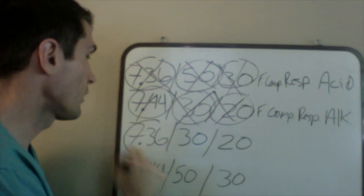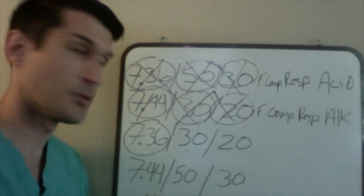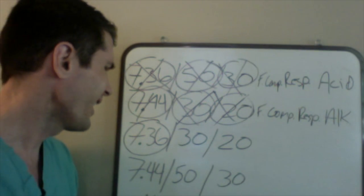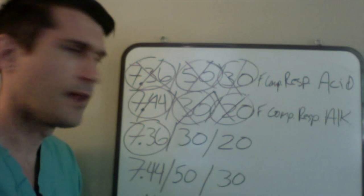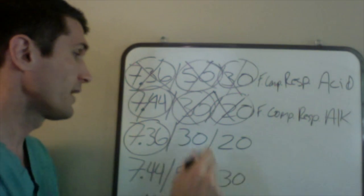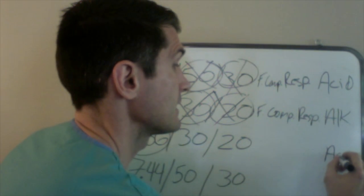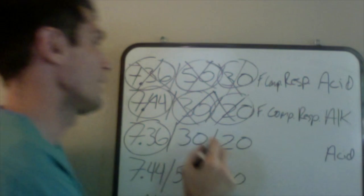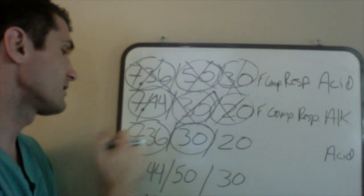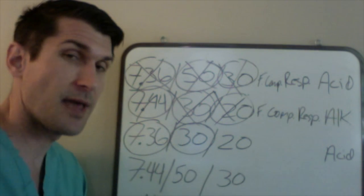Our next one is a pH of 7.36. It looks like it's within normal range — it's between 7.35 and 7.45 — but it looks like it's erring on the side of acidosis. So I'll note 'acidosis' as the first part. Now I'm going to look at my parameters. We have an acidotic situation, or a previously acidotic situation. I'm going to ask: is this first parameter behaving acidotically?